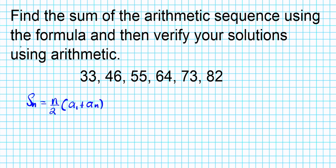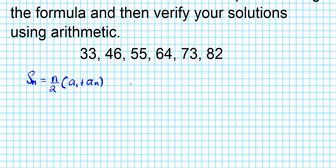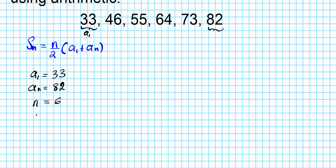Now, what do we know based on the sequence provided? We know the first term — a1 is equal to 33. We also know the last term — a sub n is 82. Now what is n? n is the number of terms that we're adding: 1, 2, 3, 4, 5, 6 — we're adding 6 terms. And S sub n is the unknown, the sum we're asked to find.